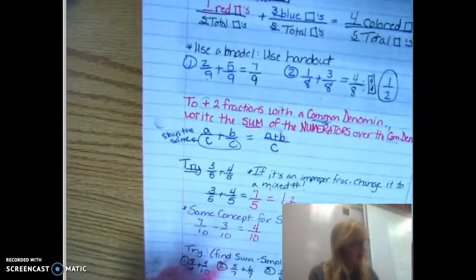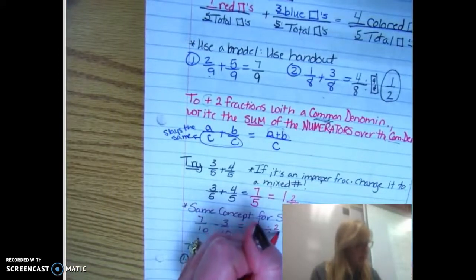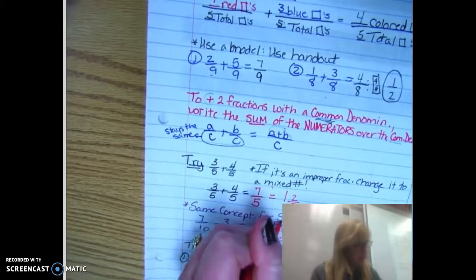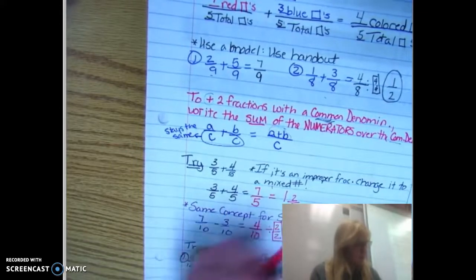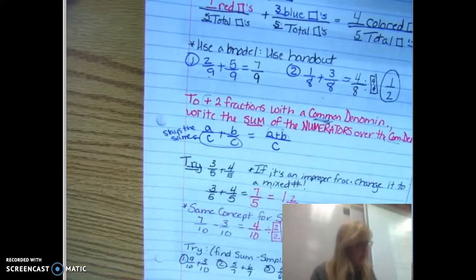However, when you look at four tenths, I can divide the top and the bottom by two. My fancy form of one. So I would get two fifths. We're doing a lot with fifths.